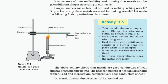Can you name some metals used for making cooking vessels? Do you know why these metals are used for making vessels? Activity 3.5: Take an aluminium or copper wire. Clamp this wire on a stand as shown in figure 3.1. Fix a pin to the free end of the wire using wax. Heat the wire with a spirit lamp, candle, or burner near the place where it is clamped. What do you observe after some time? The above activity shows that metals are good conductors of heat and have high melting points. The best conductors of heat are silver and copper.